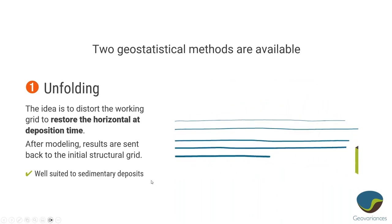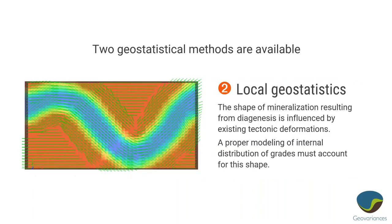This approach is well suited to sedimentary deposits. The other option is local geostatistics — this goes by different names in different software packages: local anisotropy, locally varying anisotropy, or dynamic anisotropy. We work in the real world grid as it is today, but when it comes to estimation we reorient our search ellipsoid at different points in the model, and if we get those reorientations correct, our estimates will follow the shape of the domain appropriately.